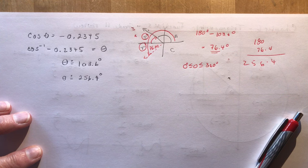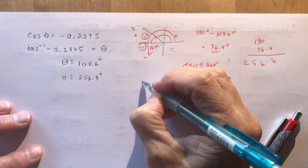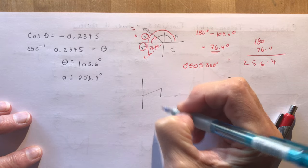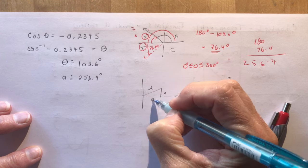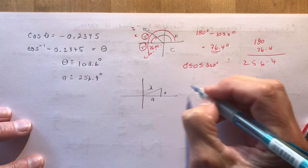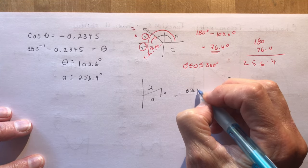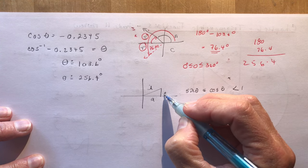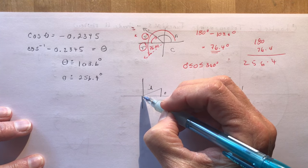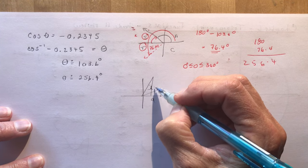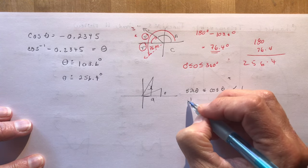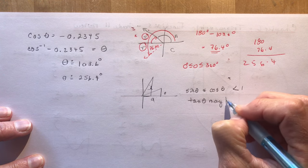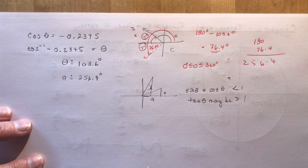One more thing: for sine and cosine, since sine is opposite over hypotenuse and cosine is adjacent over hypotenuse, the ratios will always be less than one. So sine theta and cosine theta are always less than one. But for tangent — opposite over adjacent — if the opposite side is really long and the adjacent side is short, tan theta can be greater than one. That's important to understand.